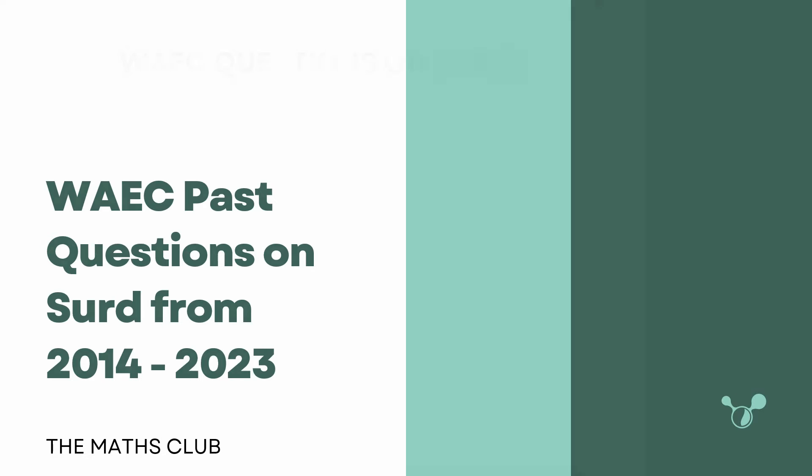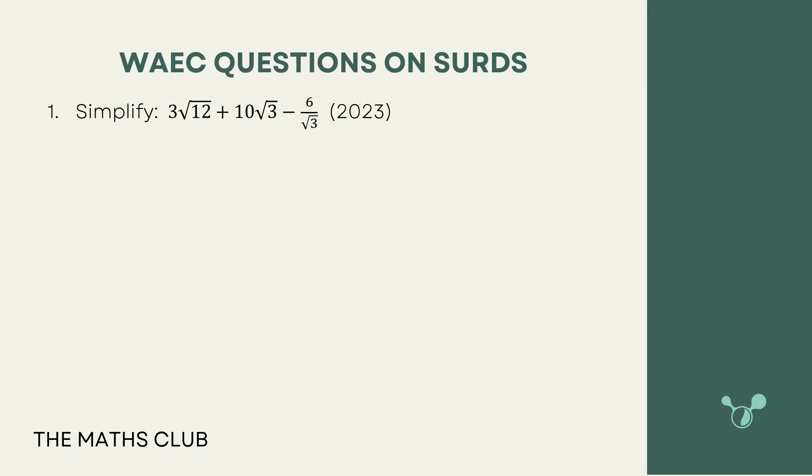Let's get started. The first question is taken from 2023 and it says that I should simplify 3√12 plus 10√3 minus 6 over √3. I'll give you some options, so let's do it together.